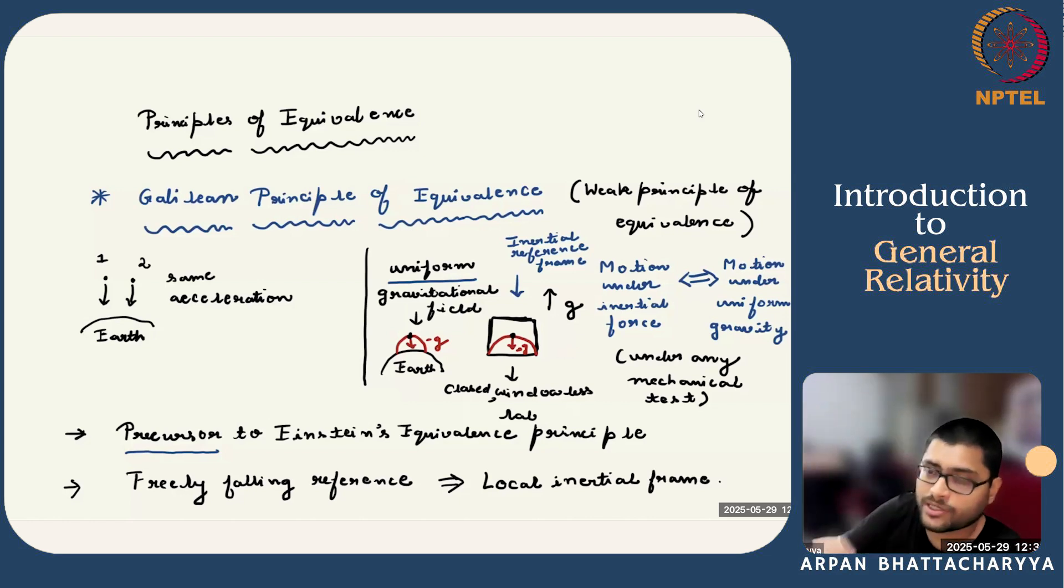Now, consider that the same windowless lab is accelerating with the same value of this acceleration g in the upward direction with respect to an inertial frame that is attached on the Earth. And you are performing the same experiment inside this lab. Then we know that because it's accelerating with the value of g, this projectile will experience a pseudo force or inertial force in the downward direction.